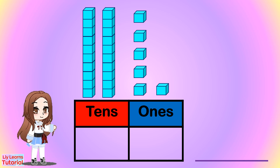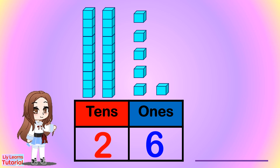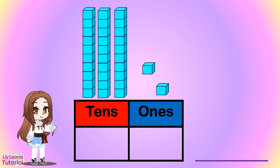Now we'll write the digits in the ones and tens place using the place value blocks. If we read this number, it will be twenty-six. Now we'll write three in the tens place because there are three tens blocks, and we'll read the number as thirty-two.